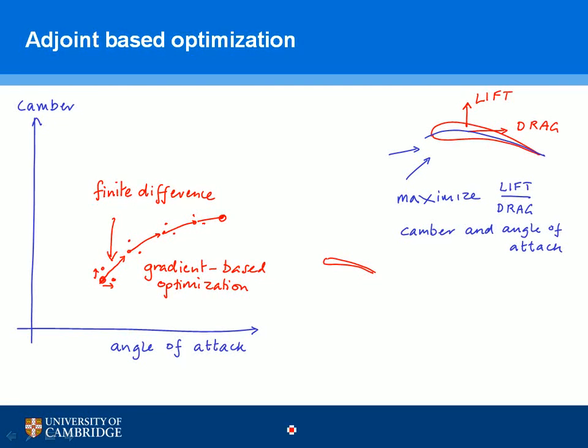That process is reasonably efficient if there are only two things we can change — in this case camber and angle of attack. But what happens if there are a hundred or a thousand things we can change from one wing to the next? Every single gradient calculation requires a thousand calculations, and that's very expensive. In adjoint-based optimization we get rid of that finite difference step, which is expensive, and replace it with a gradient calculated using the adjoint equations, which are cheap.